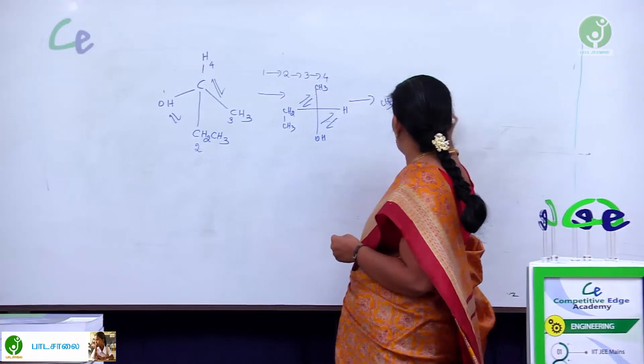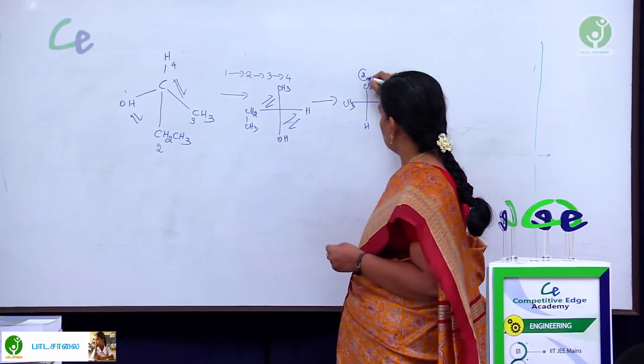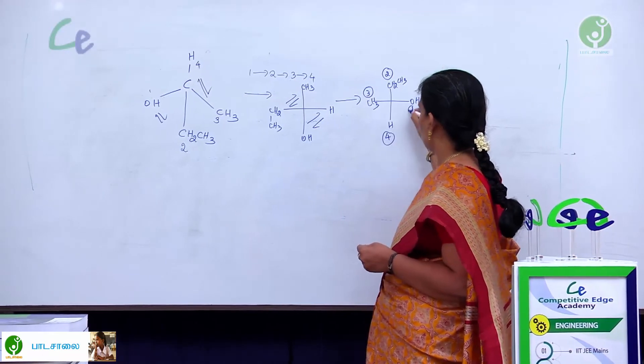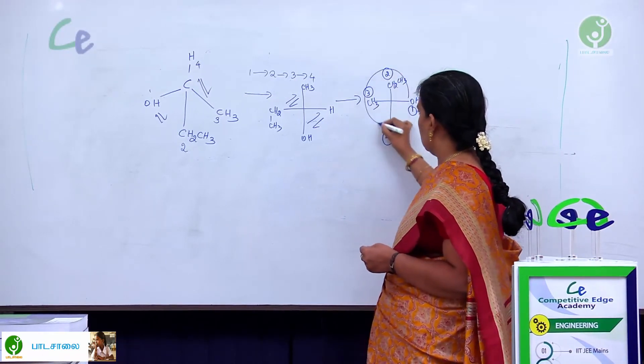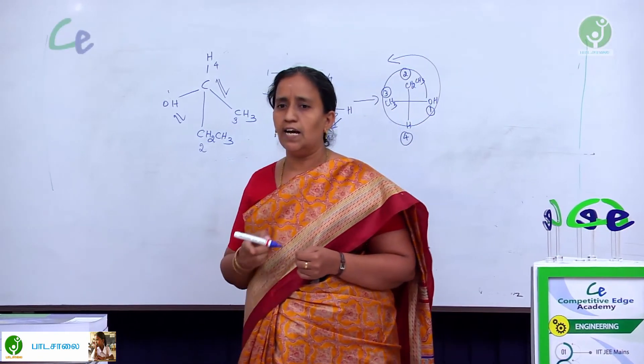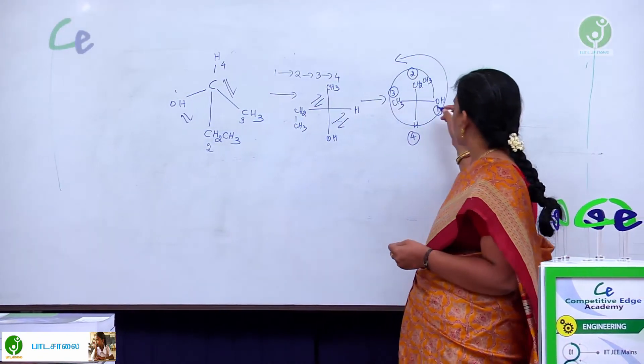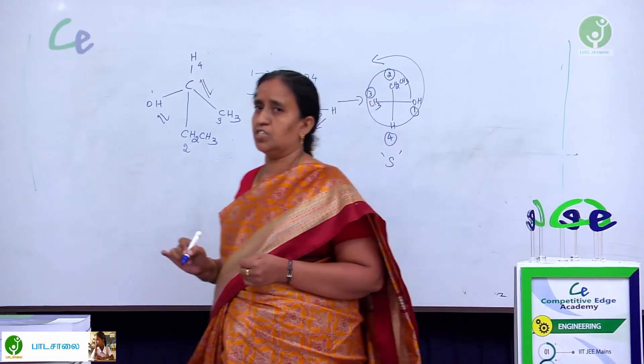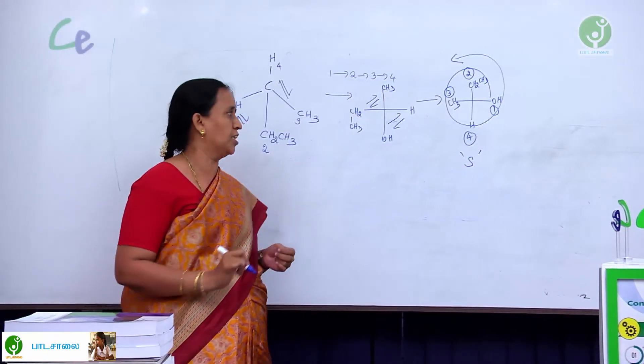Now, give the priority. OH is first, CH2 is second, CH3 is 3, then this is 4. Now, rotate the molecule. What is this rotation? Is it clockwise or anti-clockwise? It is an anti-clockwise direction. So, I can say the given molecule is S configuration. It is not an R configuration.